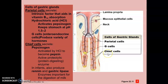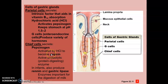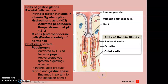Chief cells produce pepsinogen — the '-ogen' suffix means it is not active, it is a precursor. It will be activated by hydrochloric acid to become pepsin and will digest proteins. Infants also produce rennin and gastric lipase for the digestion of milk.